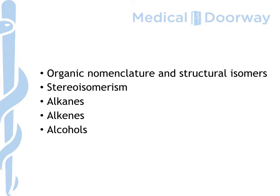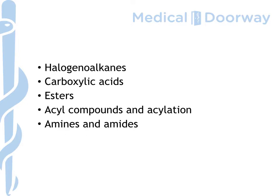Then we begin to get into functional groups. We begin with the chemistry of the alkanes, then the alkenes, and alcohols. With the alcohols, we're also going to talk about ketones and aldehydes. We'll talk about halogenoalkanes, as well as carboxylic acids, esters — and here we'll also talk about lipid esters and triacylglycerols. We'll look at acyl compounds and acylation. Some A-level boards have this in detail, some really don't, so this will be a nice comprehensive lecture so that you have all the knowledge you need.